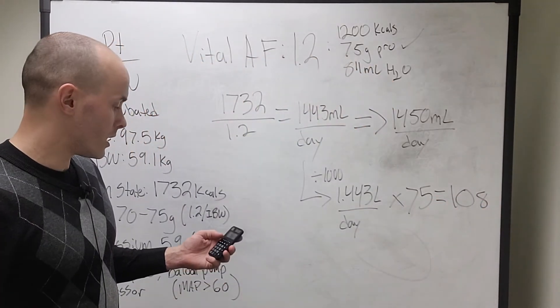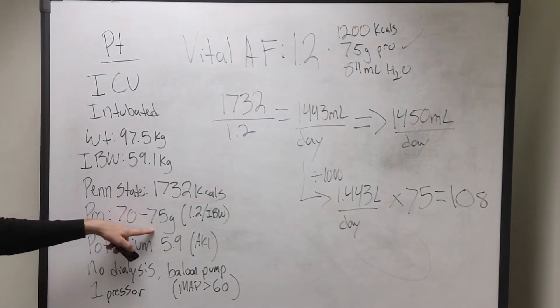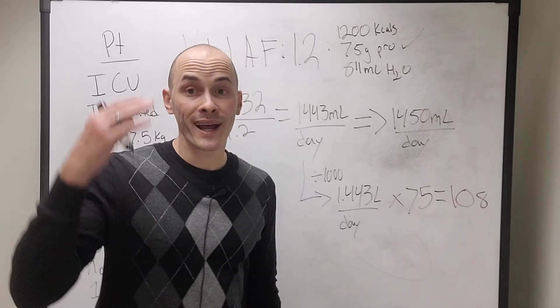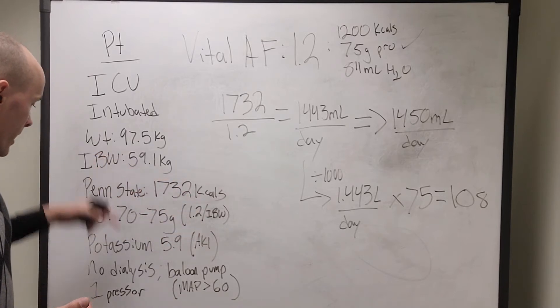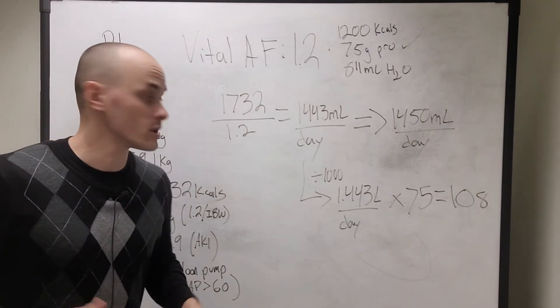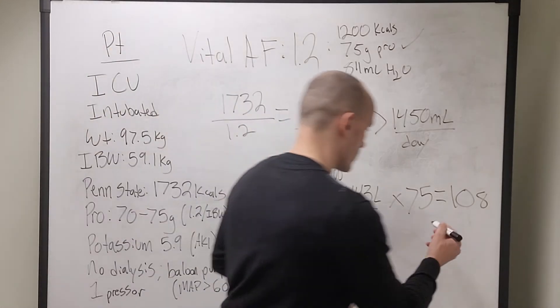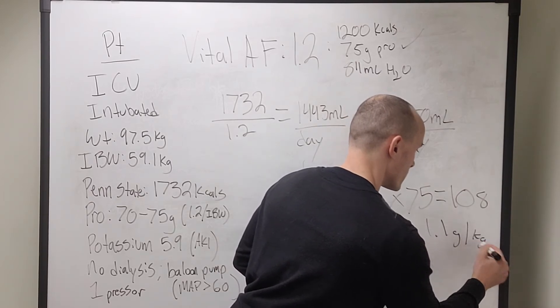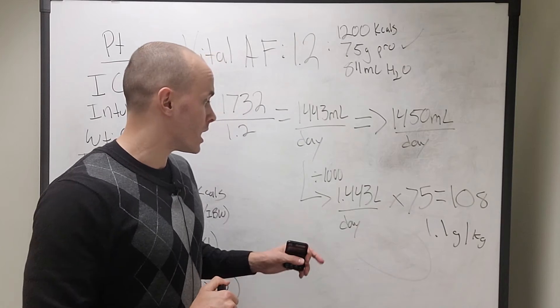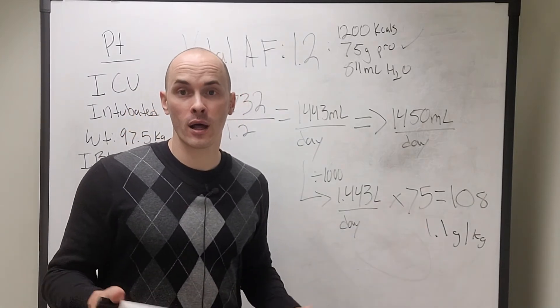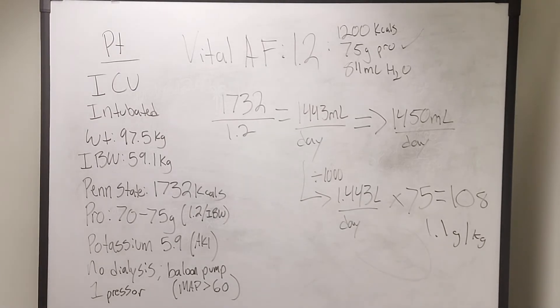This formula will meet their calorie needs. It will overshoot their protein by quite a bit, by 30 plus grams. However, my thinking is this, even though their ideal body weight, which is what the protein was decided on was 59.1, their actual body weight is closer to 100 kilos. So this 108 grams of protein is actually 1.1 gram per kilogram current weight. So even though it's high in protein, it's most likely more than what they actually need, it's not super high given the fact that if you use their current weight.